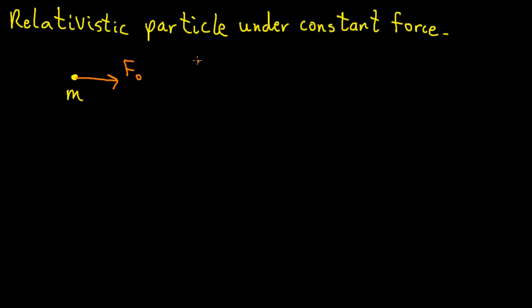Classically, we know that this particle feels constant acceleration, so its velocity would linearly increase forever. Since F equals ma, the acceleration is F0 over m. So the velocity as a function of time, assuming it starts at rest, is F0 over mt.